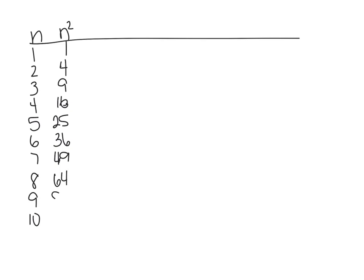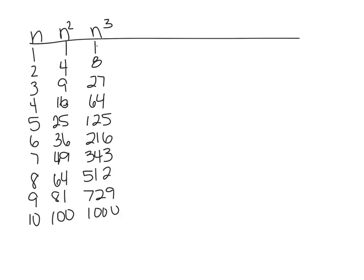Then n cubed is 1, 8, because now we're multiplying the n squared by that number again. So 9 times 3 is 27, 64, 125, 216, 343, 512, 729, and 1000.